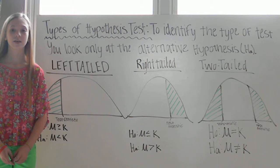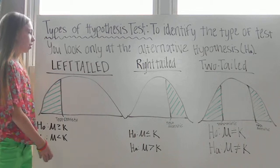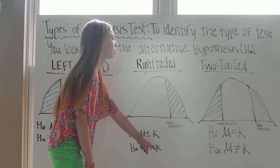If the alternative hypothesis contains the greater than inequality symbol, it is a right-tailed hypothesis test. The alternative hypothesis says mu is greater than k, so this would be a right-tailed test.